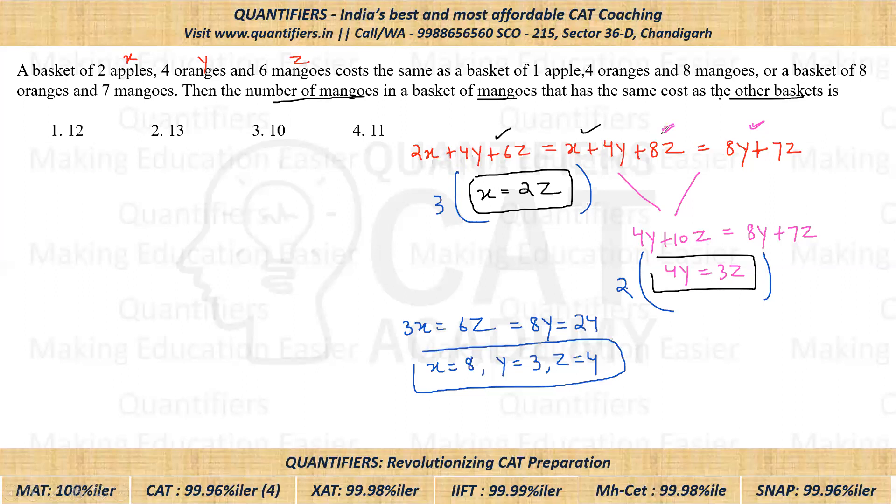All baskets have the same cost. So let's try to figure out what will be the cost of basket. I can put the values of X, Y and Z in any of the equations. So I'll put Y and Z's value here. Y's value is three, so eight times three will be twenty-four. Seven into Z, Z's value is four, so seven into four will be twenty-eight. So twenty-four plus twenty-eight will be fifty-two. This is one basket's cost.